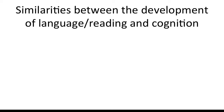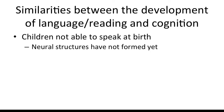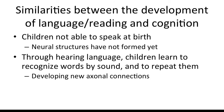We can see certain similarities between the development of language and the development of cognition. At birth, the neural structures necessary for language have not yet developed. Through hearing repeatedly the sounds of words and associating those sounds with objects, children begin to repeat them through their own speech. This process requires the development of new axonal connections between the parts of the brain involved in hearing and language.